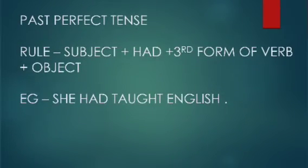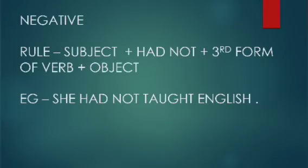Past Perfect Tense: Subject plus had plus third form of verb plus object. Example: She had taught English. Negative: Subject plus had not plus third form of verb plus object. Example: She had not taught English.